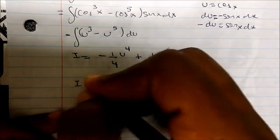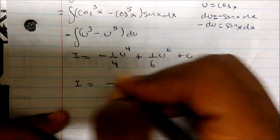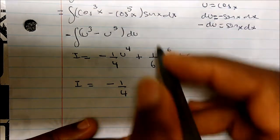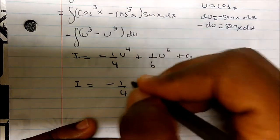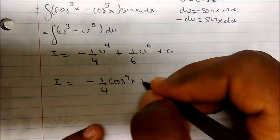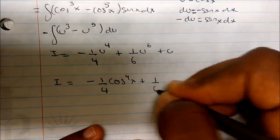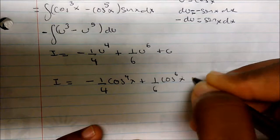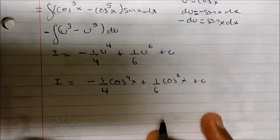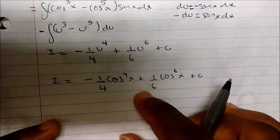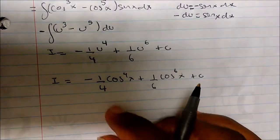Now I just plug back in. This becomes negative one-fourth — and what was my u? It's cosine — so that gives cosine to the fourth, plus one-sixth cosine to the sixth x plus C. And so this is my final answer.